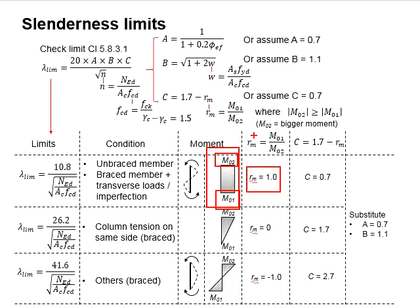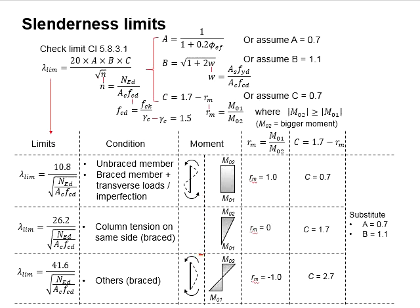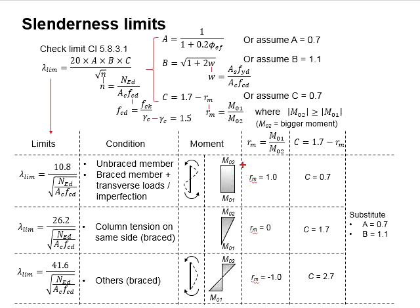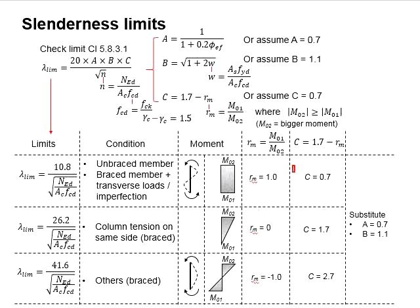When M01 is equal to zero, the division results in RM equals 0.0. When M01 is the negative version of M02, RM will be equal to negative 1.0. Substituting these RM values into the equation for C will yield different values of C for the slenderness limit.